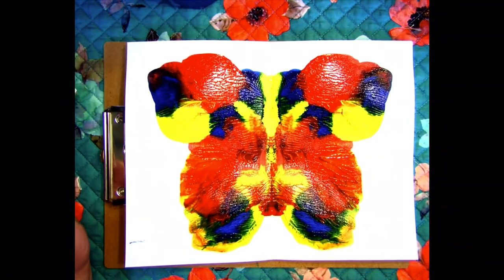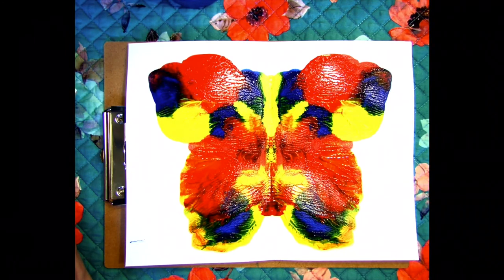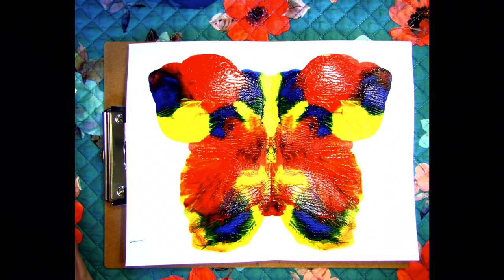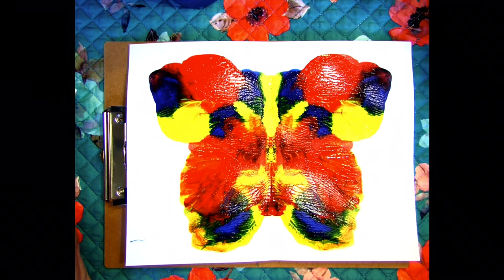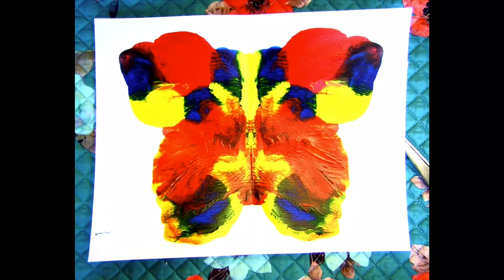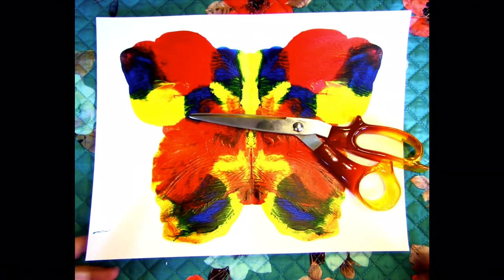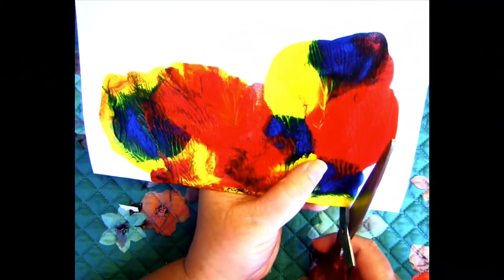When yellow and red mix they will make orange. When yellow and blue mix they will make green, and red and blue will mix to make purple. Once it is dry, fold your paper so that you can see your paint and cut around the edges. If your shape doesn't look like a butterfly, you can just cut one out.